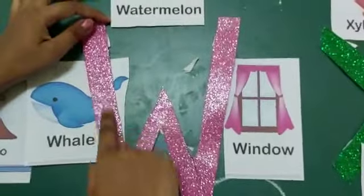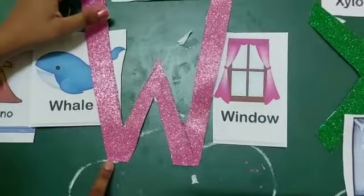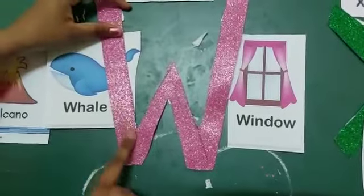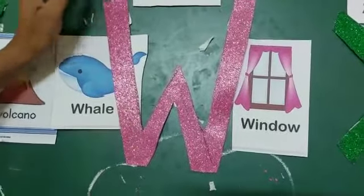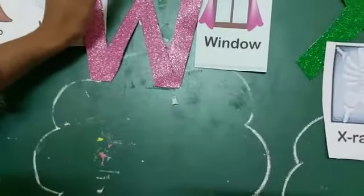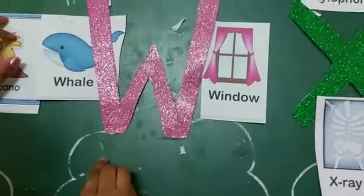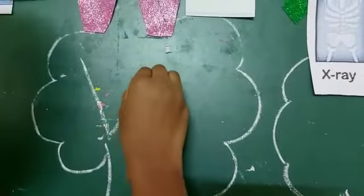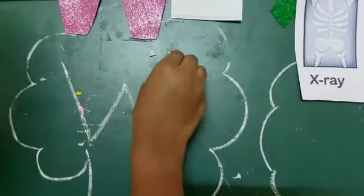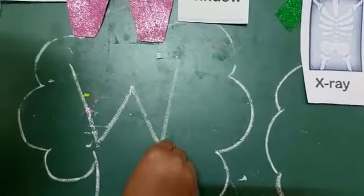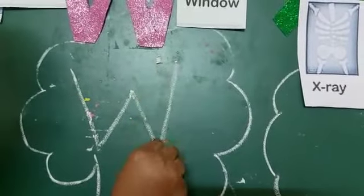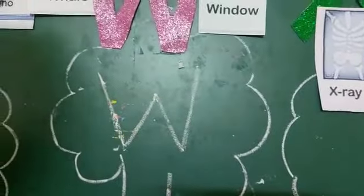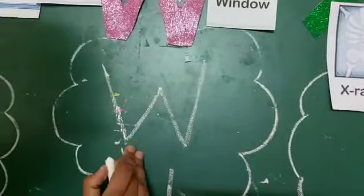Next letter is capital W. What is this letter called? This letter is called capital W. How to write this letter? Left slant line, right slant line. Again, left slant line, right slant line. What did it become children? It became capital W. This is capital W.